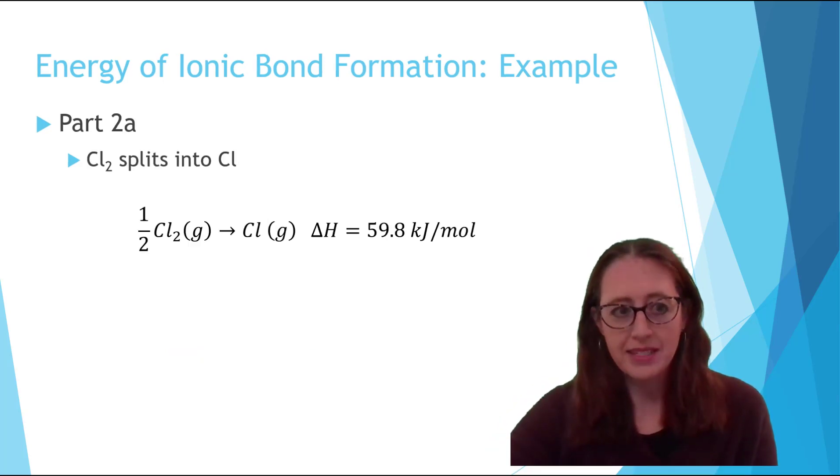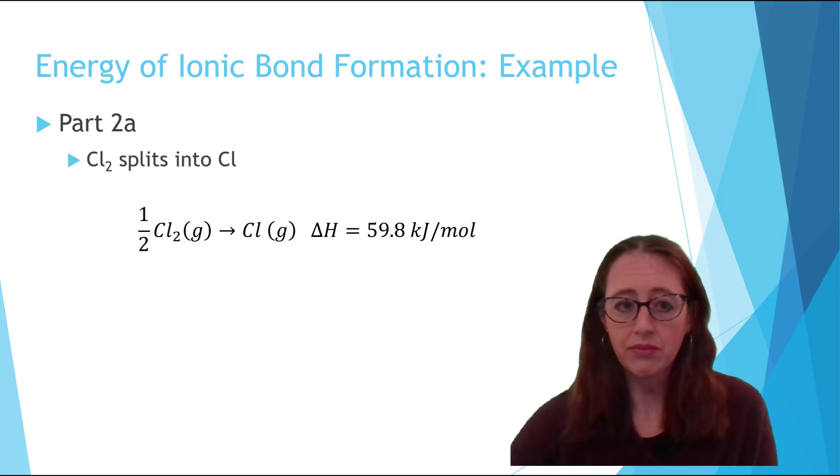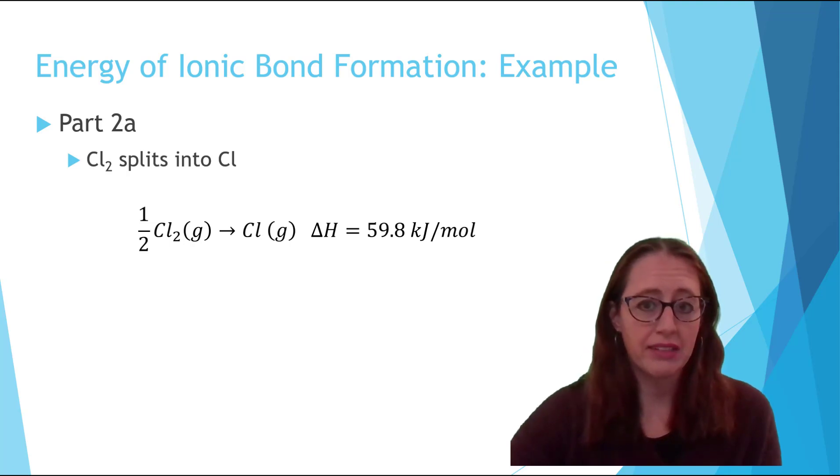For the next part of the process, we have to talk about chlorine. This is actually a two-step process because chlorine is a diatomic molecule, and so we need to split it in half. But we only need one molecule of chlorine, and so we actually need to just use one half of the energy it takes to split a chlorine molecule. So if you look this up in the tables, it's going to say 119.6, and so we actually have to divide that by two to get just one chlorine enthalpy. That takes energy to do, and so it's a positive value.